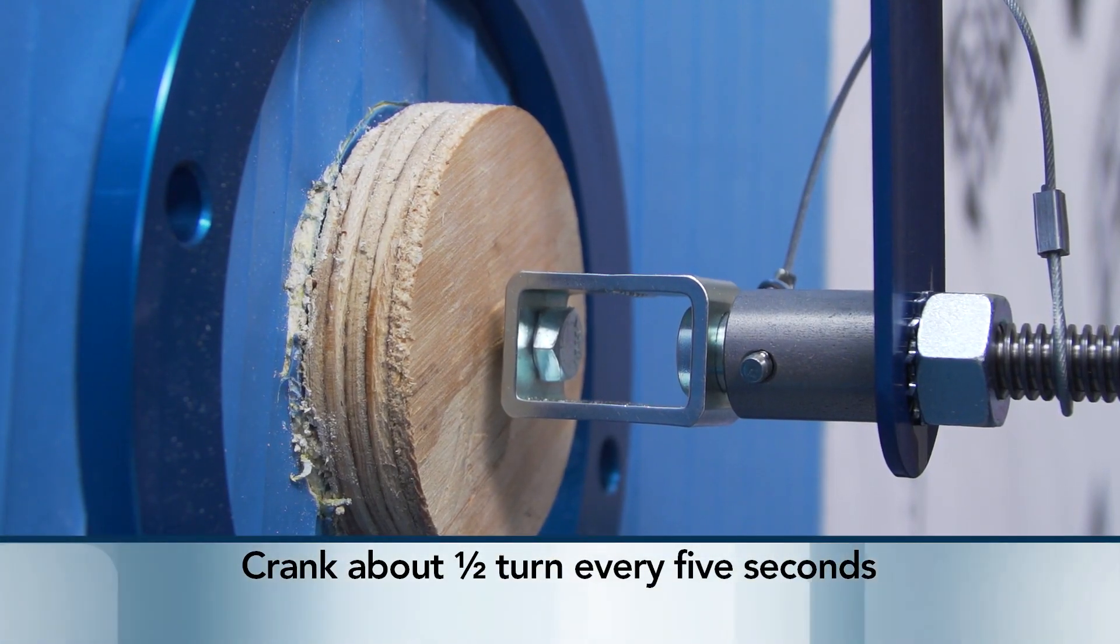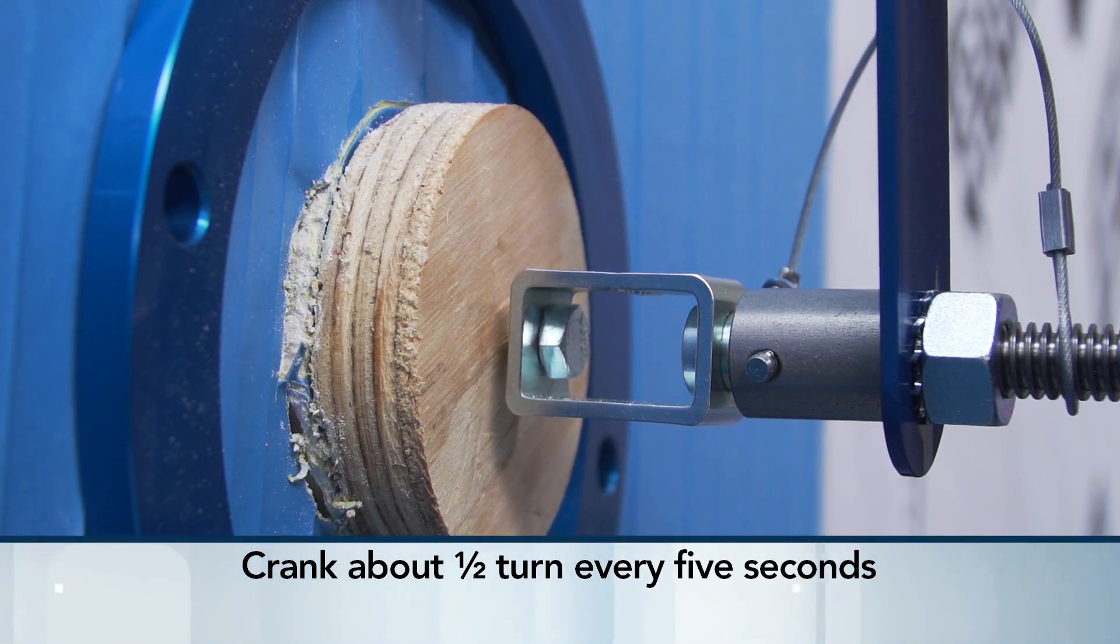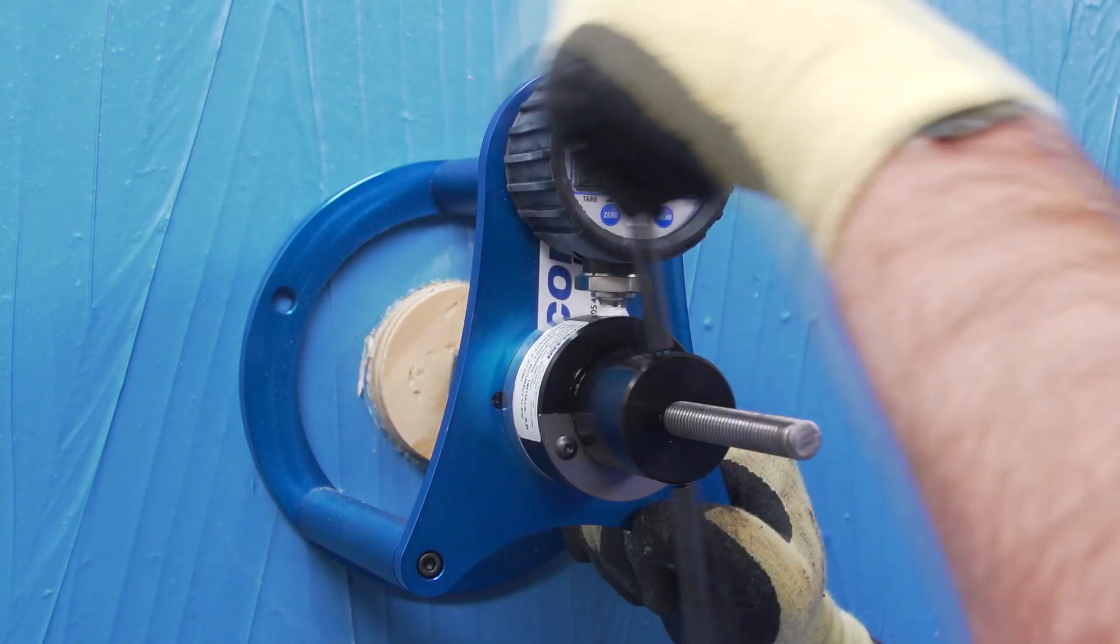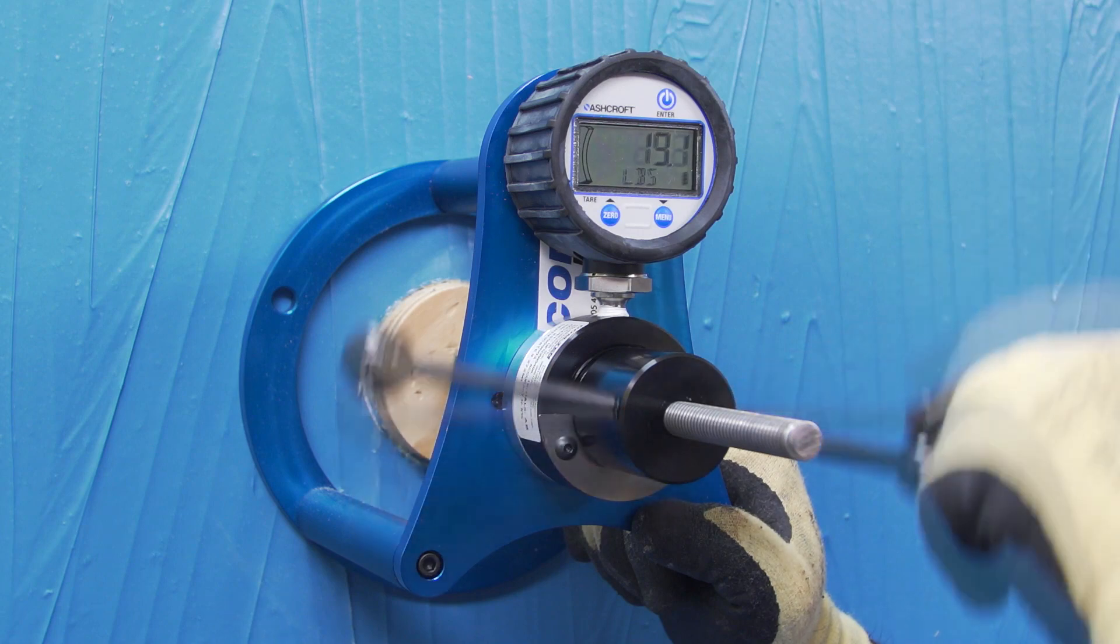We recommend cranking about a half turn every five seconds. Keeping an eye on the pull test gauge, continue cranking until the puck is released.